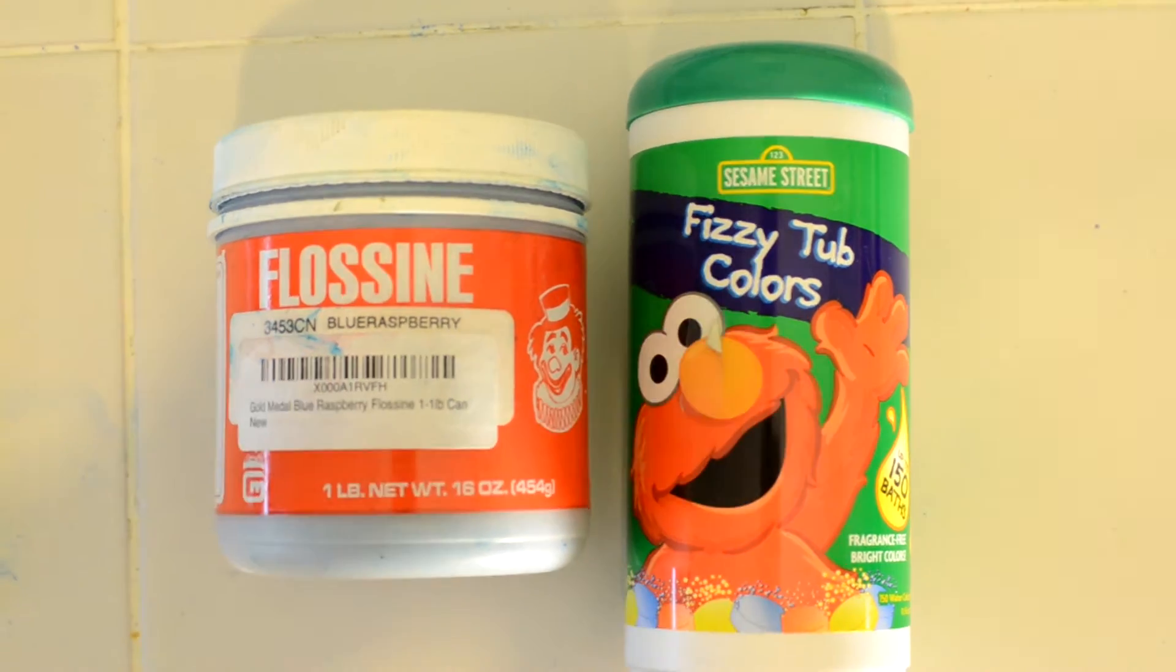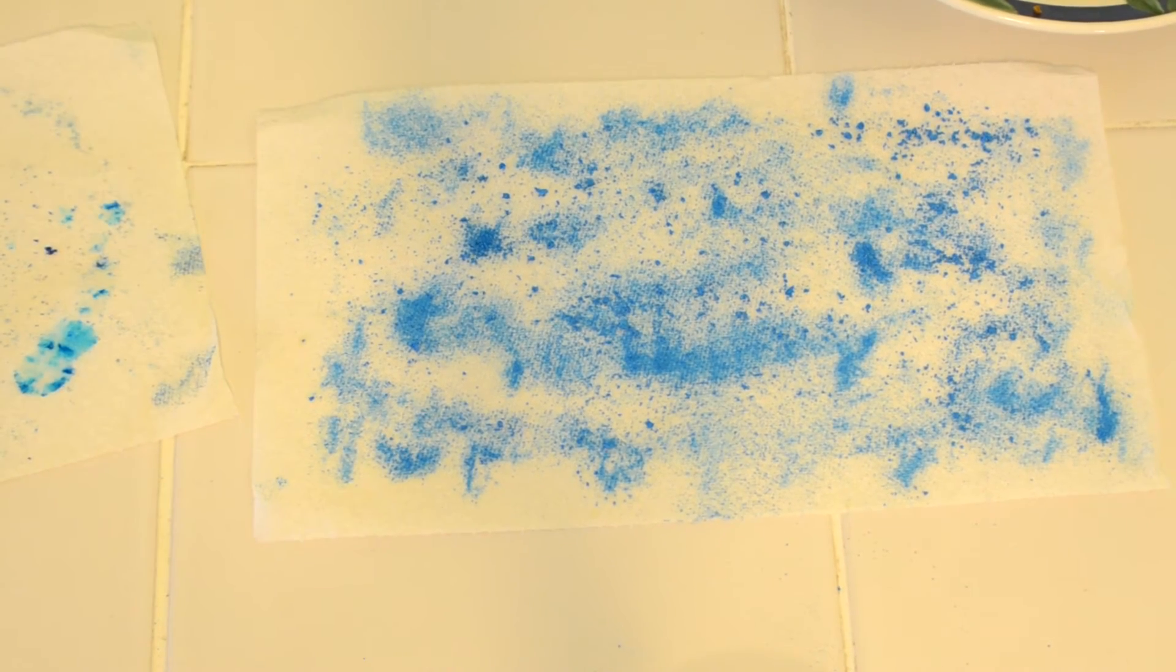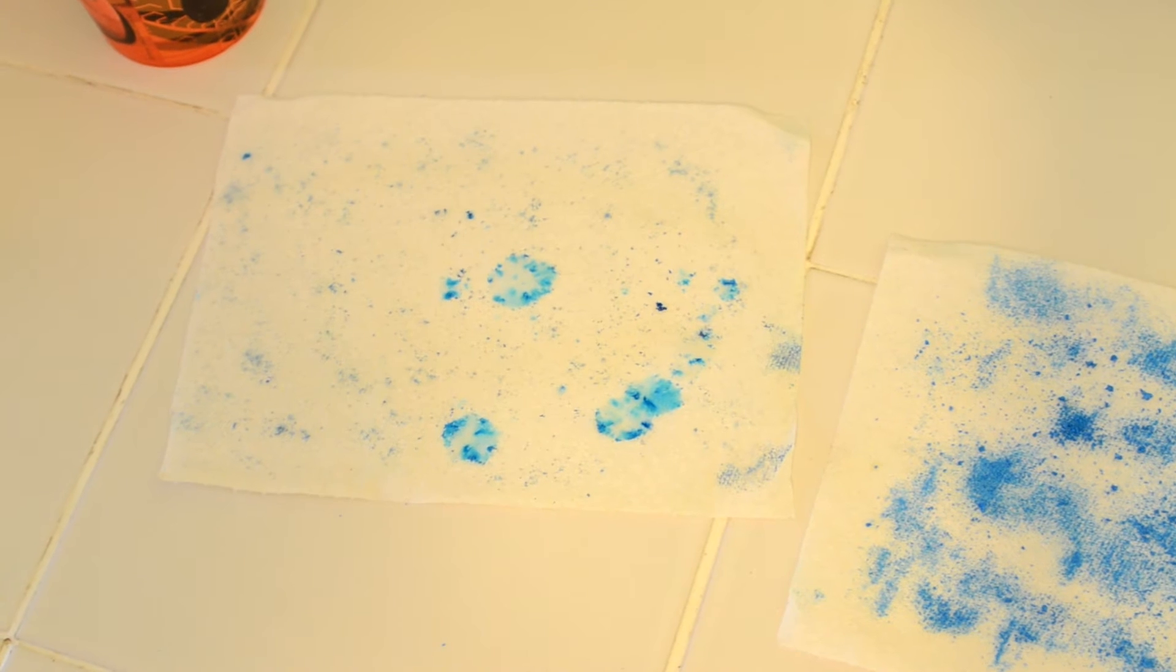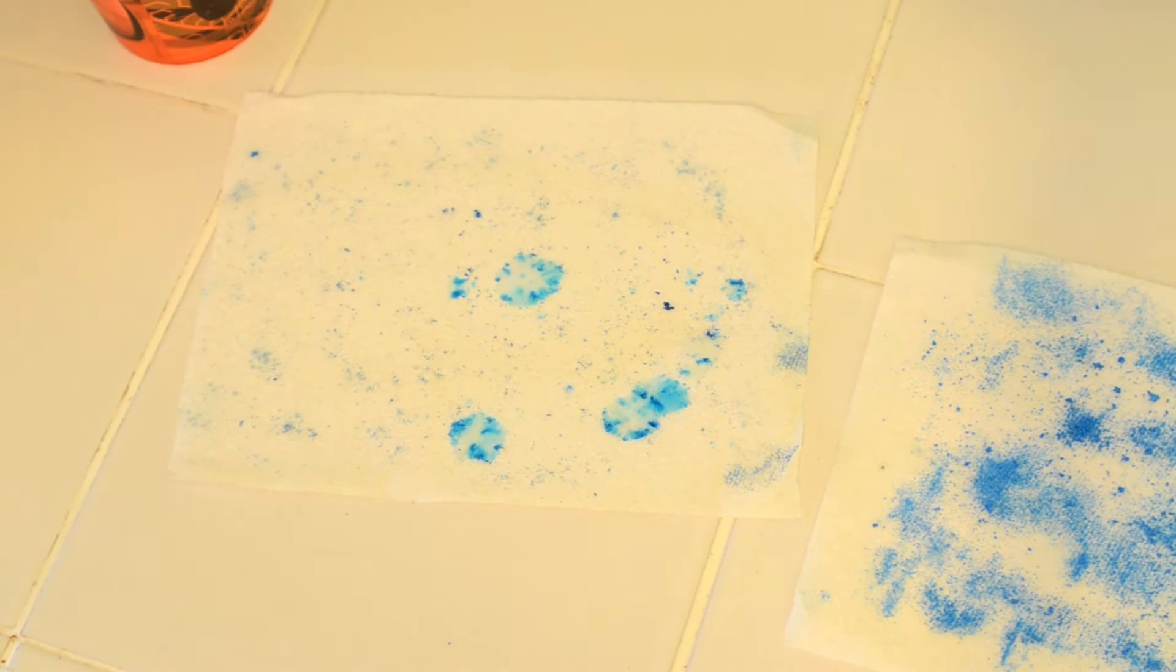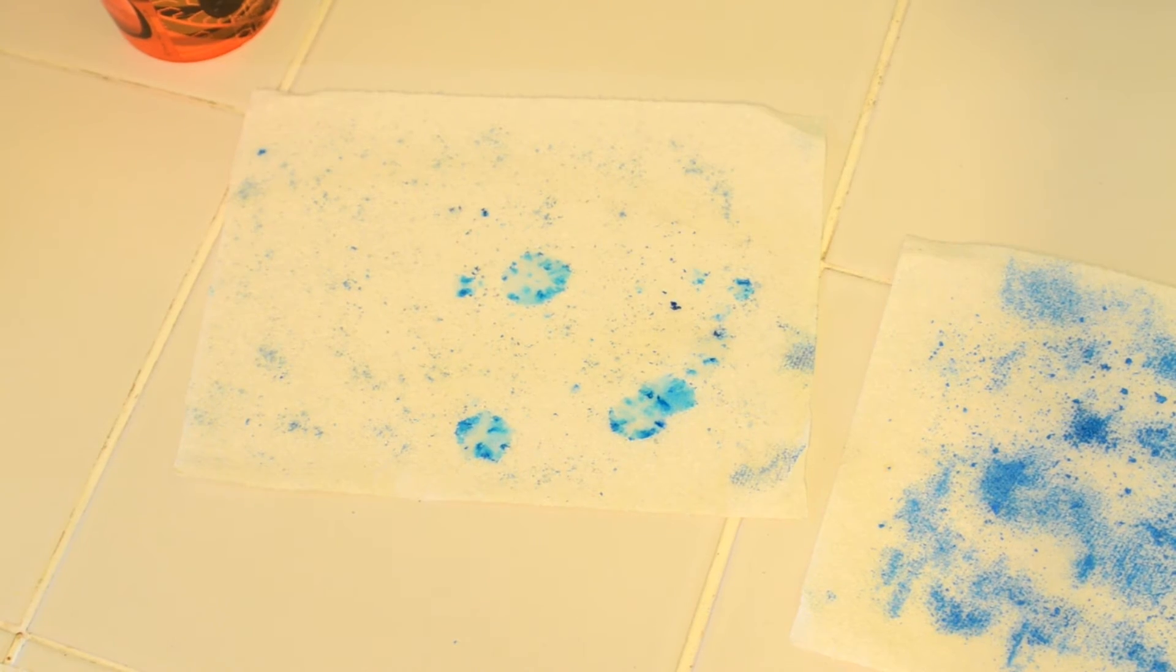So here are a couple samples of each of those. This is a sample made with the tub coloring, and that is a sample made with the flossing. The difference between them is that the tub coloring has a lot less coloring agent, and so it takes a lot more of the material to really see that it's working.